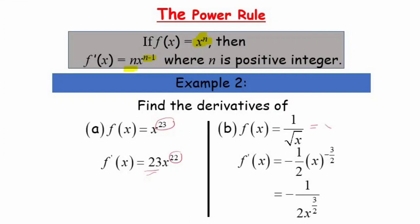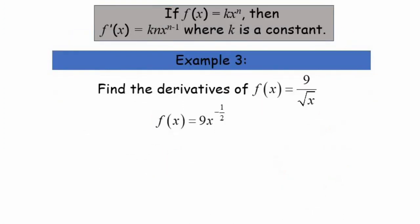We bring negative one-half down as the coefficient and subtract negative one-half by 1, giving a power of negative three-halves. We then rewrite the expression accordingly. The principle of the power rule is to bring the power as the coefficient and subtract the power by 1.